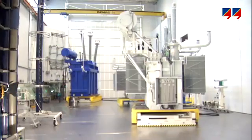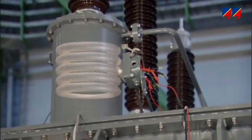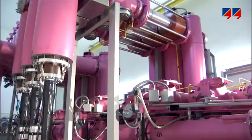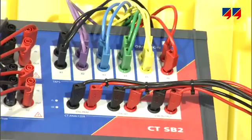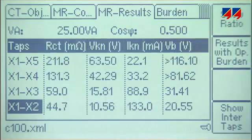CT Analyzer can test all types of CTs, including those installed in transformer bushings or in gas insulated switchgear. For CTs with tapped secondary windings, the CT Analyzer switch box allows for connection to the taps of a multi-ratio CT and performs the test in one test run, automatically and efficiently.